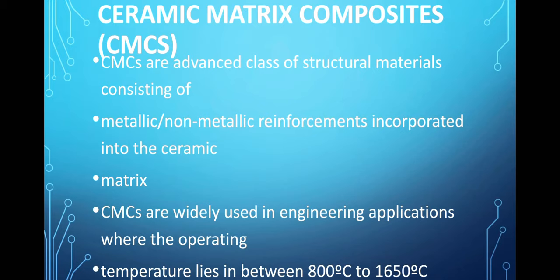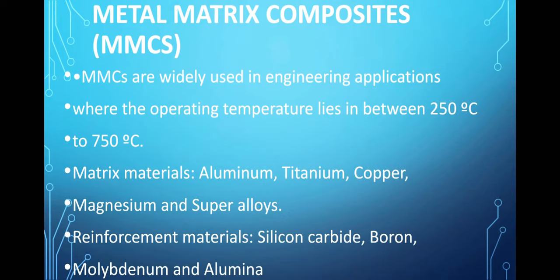Ceramic matrix composites are used in engineering applications. The temperature range for ceramic matrix composites is 800 degree Celsius to 1650 degree Celsius — meaning the material can withstand temperatures in this range without changing its properties.